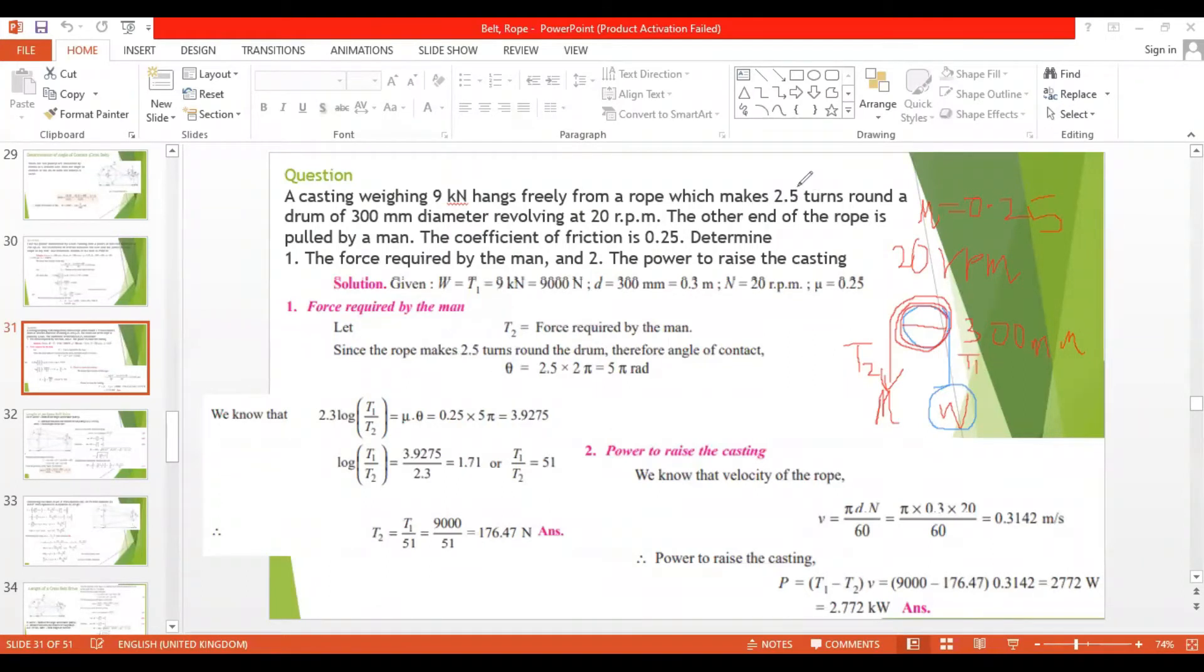Theta is 2.5 turns of the drum, so we need to find 2.5 into... 2 pi is equal to 360 degrees.